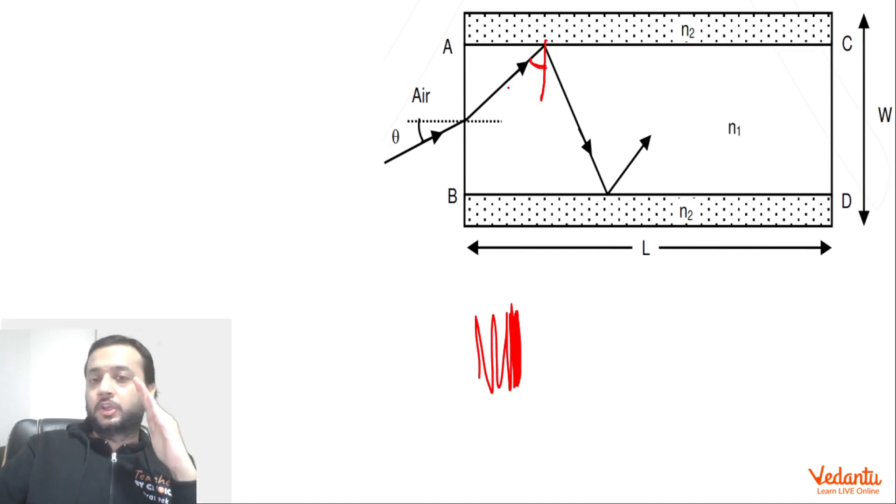So we want the ray to remain with the inclination of the ray very high, but of course it should not be less than theta critical. In the ideal case, in the limiting case we can say this should be theta critical.